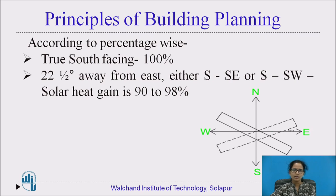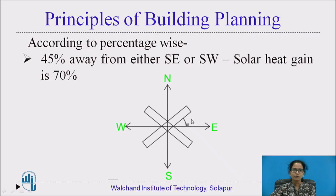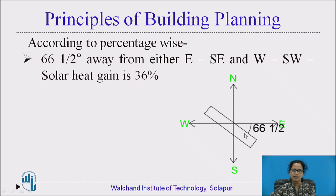We will see the solar heat gain percentage. When the orientation of the building is towards true south-facing, we have 100% solar heat gain. When the orientation is making an angle of 22.5 degrees away from south, either south-east or south-west, the solar heat percentage is 90 to 98%, which is much higher. When it is making an angle of 45 degrees away from either south-east or south-west, the solar heat gain is 70%. Further, at 66.5 degrees away from either south-east or south-west direction, the solar heat gain is 36%.